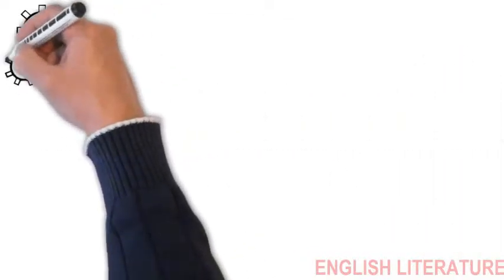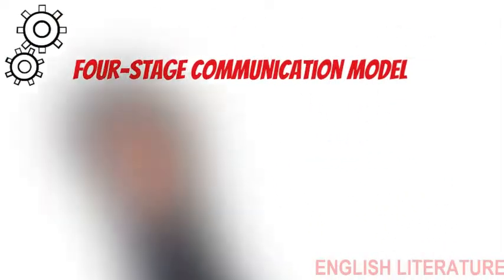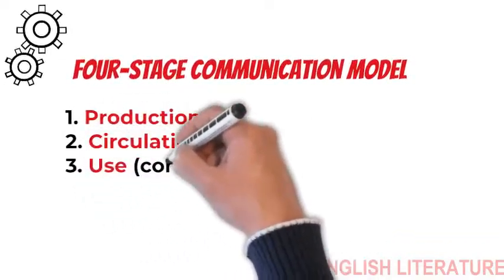In his essay, Hall proposed four-stage theory of communication in which he identified the following stages: Production, circulation, use (that is consumption), and reproduction.